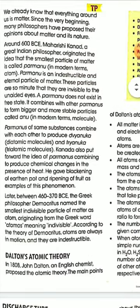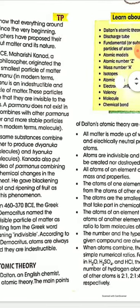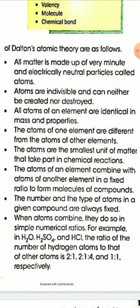Now, the modern atomic theory — Dalton's atomic theory. In 1808, John Dalton, an English chemist, proposed the atomic theory. The main points are: all matter is made up of very minute and electrically neutral particles called atoms, and atoms are indivisible and can neither be created nor destroyed.